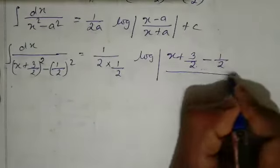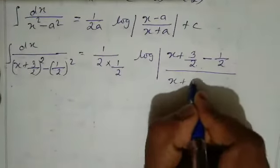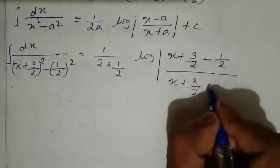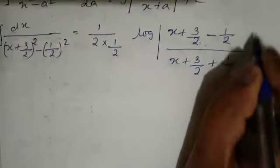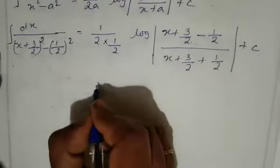1 divided by 2, and then denominator x. Once again x plus 3 by 2 plus a, so plus 1 by 2 plus C.